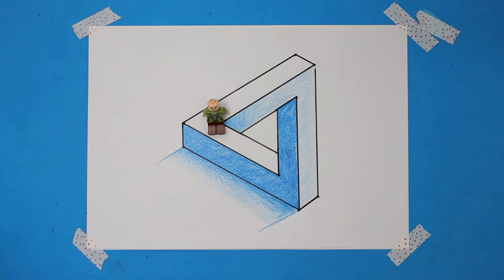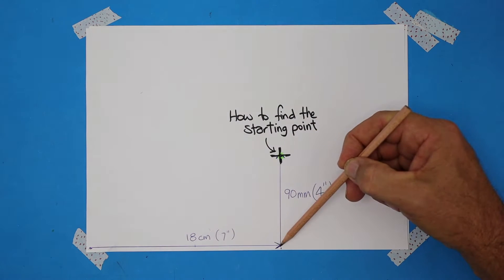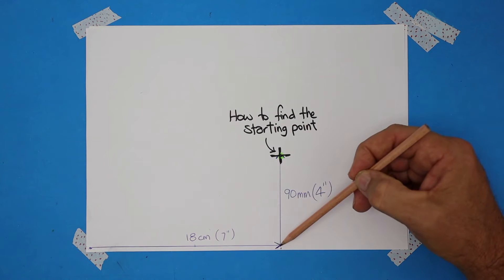Let's measure our starting point. From the corner of the page, we're going to come across 18 centimeters and then we'll go upwards 9 centimeters, 90 mil or 4 inches.